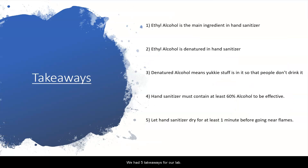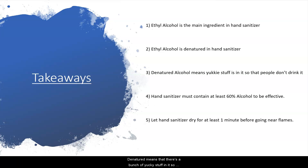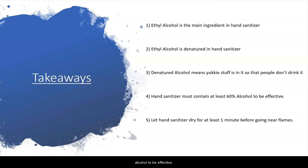Our takeaways: we had five takeaways for our lab. The first was that ethyl alcohol is the main ingredient in hand sanitizer. It's denatured, meaning there's stuff added so that people don't drink it. Hand sanitizer must contain at least 60% alcohol to be effective. And finally, if you do use hand sanitizer, wait for at least one minute before going near any flames.